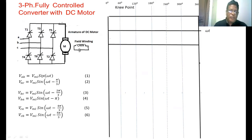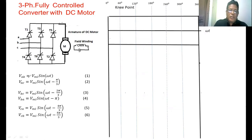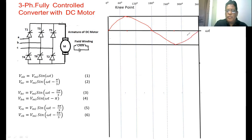Now we want to draw the input voltage VAB. VAB equals VmL sin(ωt). This is the sine function. To find the starting point, we make the angle equal to zero, so the VAB voltage starting point is 0 degrees. At 90 degrees it reaches the positive maximum value; the next 90 degrees it comes to zero; the next 90 degrees it reaches the negative maximum; then it returns to zero. This waveform is VAB.